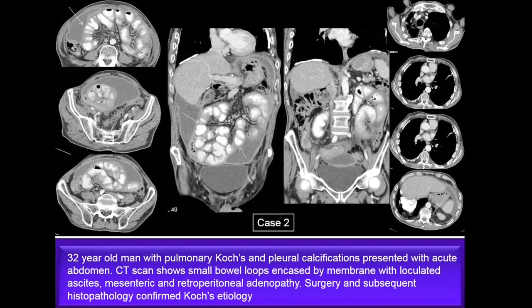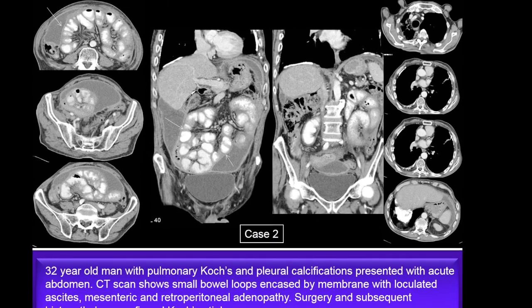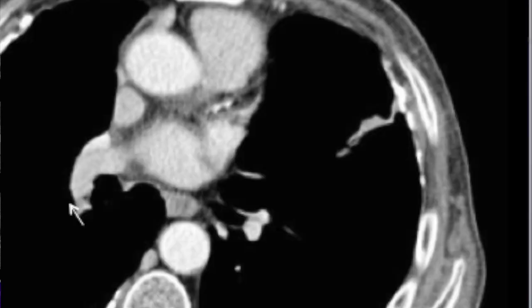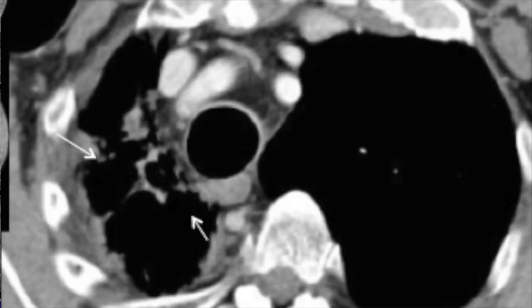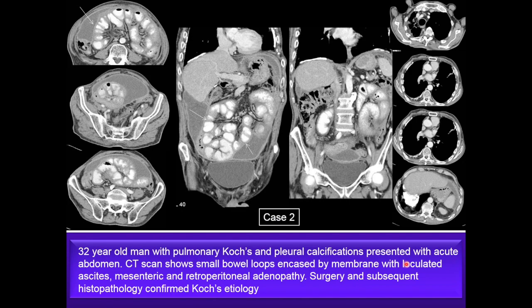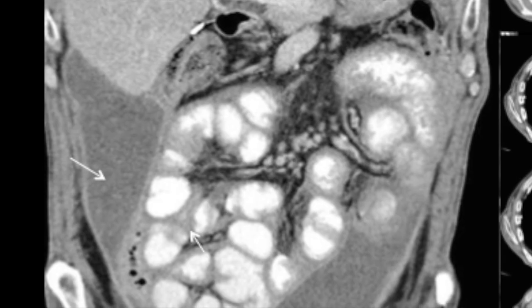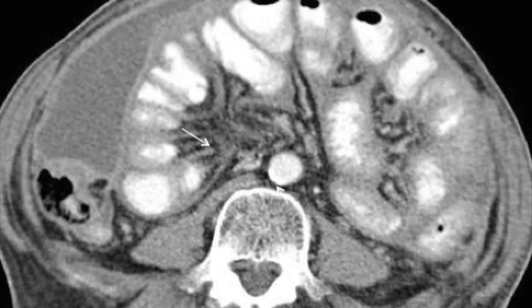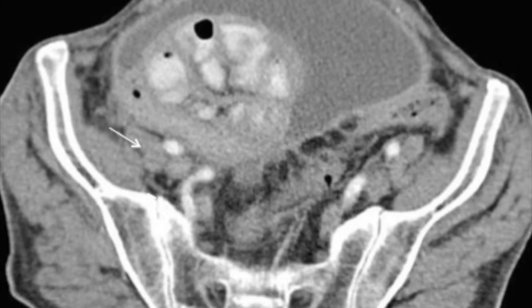The second case is a 32 year old man with pulmonary cocks and pleural calcification. Pleural calcifications and loss of lung volume on the right side with multiple infiltrates are seen. This patient presented with acute abdomen and CT scan showed small bowel loops encased by a membrane-like structure, loculated ascites, and mesenteric and retroperitoneal adenopathy. Surgery and subsequent histopathology confirmed tuberculosis etiology.